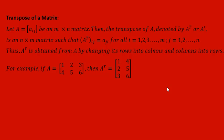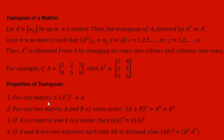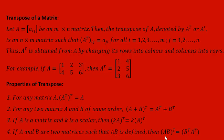There are some properties of transpose. For any matrix A, if we transpose it twice we get the original matrix. If A and B are of the same order, then (A plus B) transpose equals A transpose plus B transpose. Third, for any scalar K, (KA) transpose equals K times A transpose. Finally, if the product AB is defined, then (AB) transpose equals B transpose times A transpose. These are the four properties of transpose of a matrix.